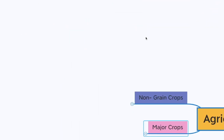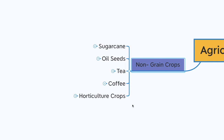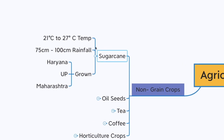Now let's look at non-grain crops. Sugarcane, oil seeds, tea, coffee, and horticulture crops are part of non-grain crops. Sugarcane requires a temperature of about 21 to 27 degrees centigrade, a rainfall of about 75 to 100 centimeters, and is grown in Haryana, Uttar Pradesh, and Maharashtra.